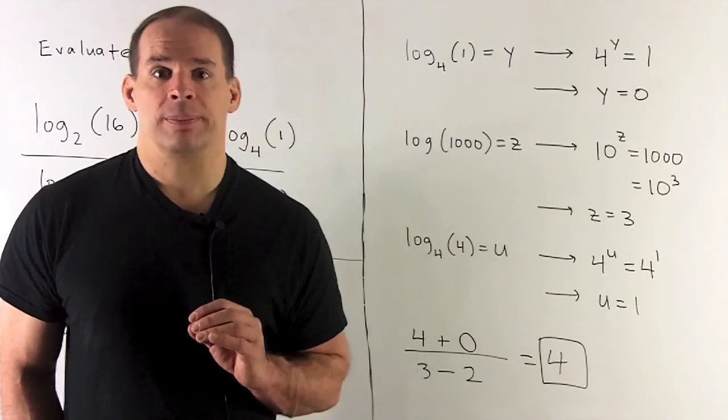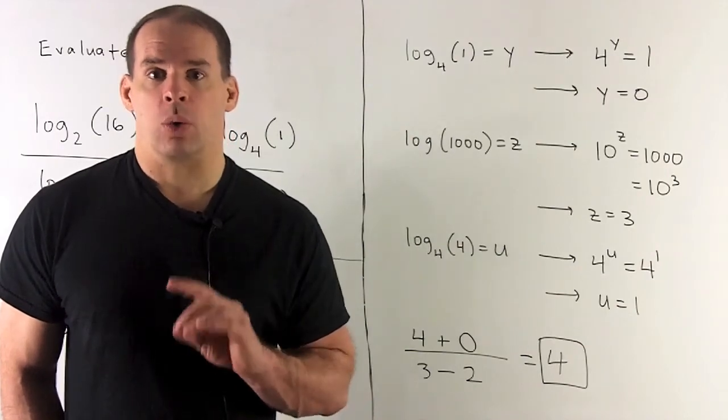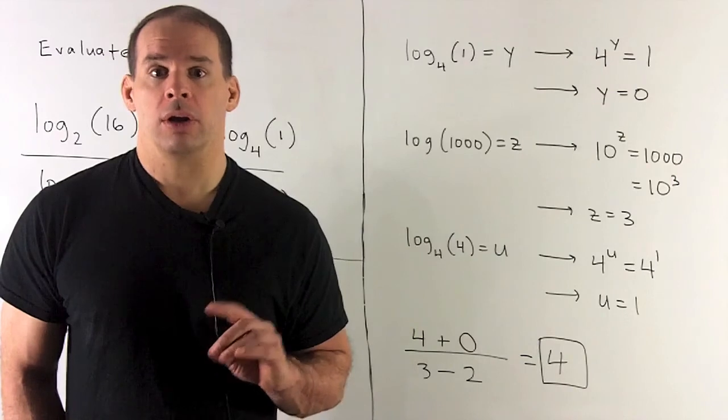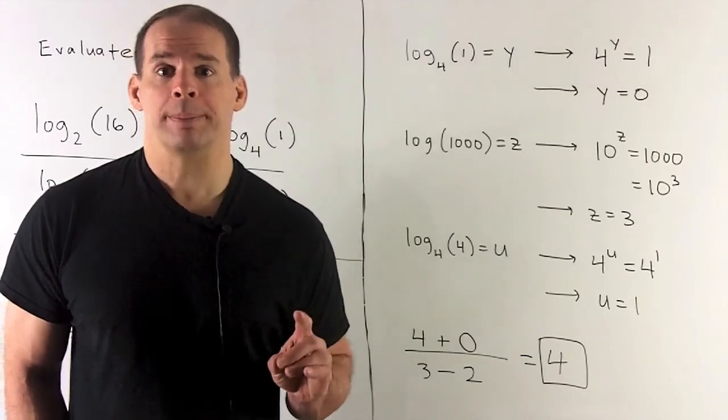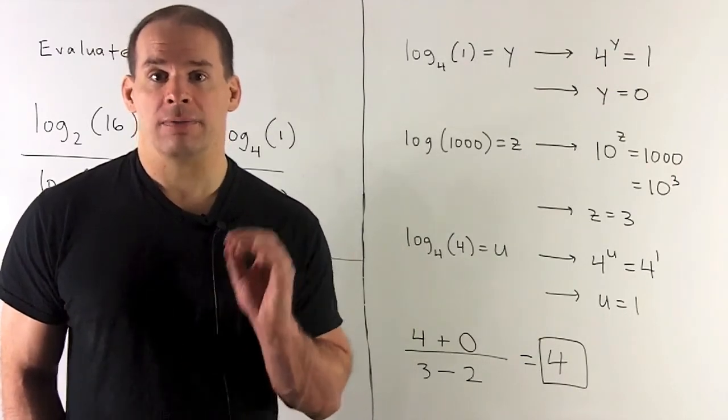Now we can finish. So I'm going to have my quotient, 4 plus 0 over 3 minus 2 times 1. So we're going to wind up getting a 4.